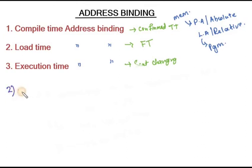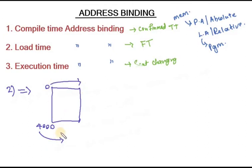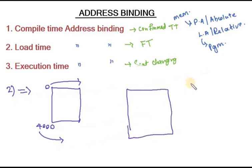In load time address binding, when the program is compiled, all the addresses will be in relocatable address mode. We have already said that the program uses logical addresses, so 0 to 4000 is the logical address range. When the program is getting loaded, the loader fits that program into another location — for example, 2000 to 6000.